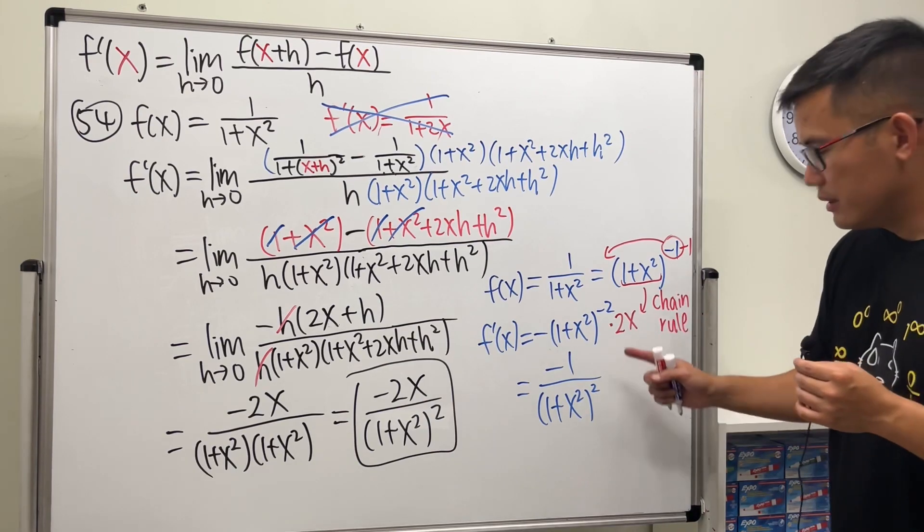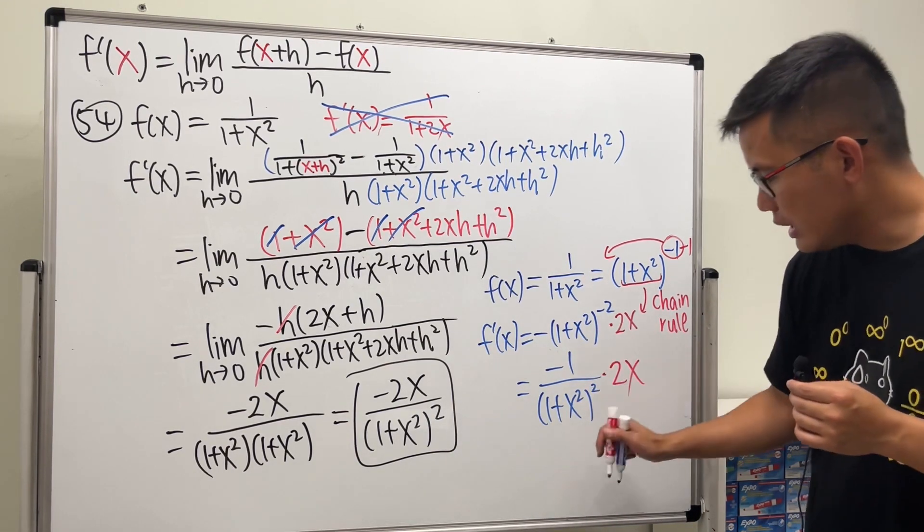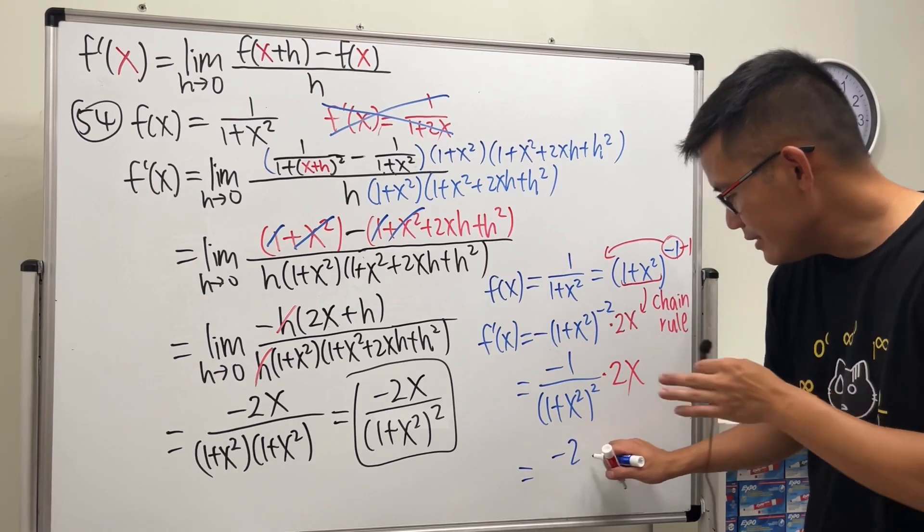...chain rule part. So you see, if we multiply by 2x all together, we have the answer that we had earlier.